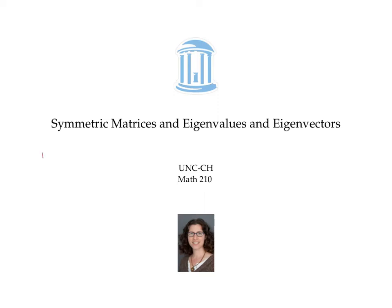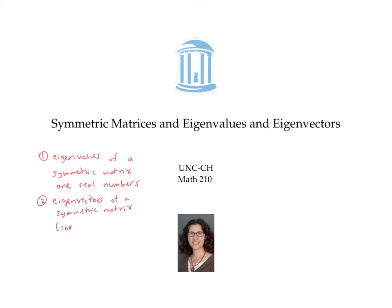In a previous video, we stated two facts about the eigenvalues and eigenvectors of symmetric matrices. First, we said that the eigenvalues of a symmetric matrix are all real numbers — no complex numbers that aren't real occur as roots of the characteristic polynomial. The second fact is that the eigenvectors of a symmetric matrix corresponding to distinct eigenvalues are orthogonal. This video gives proofs of these two facts.